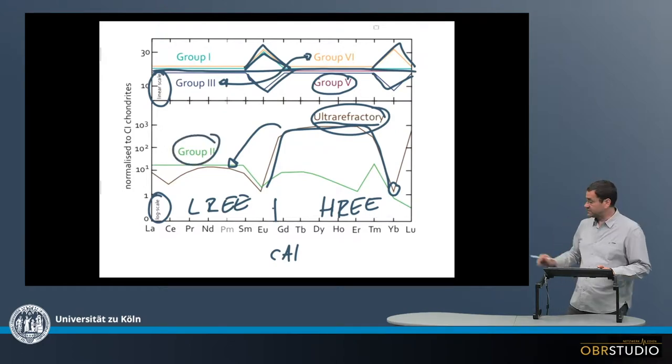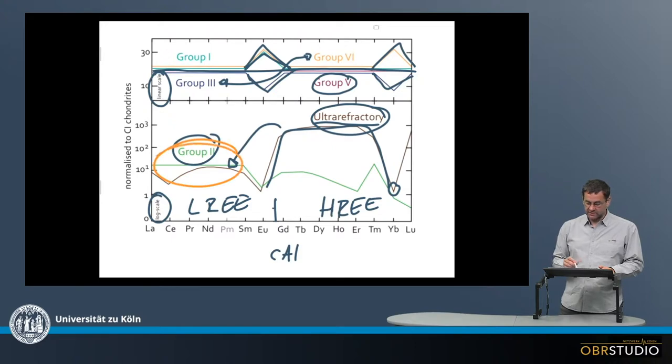Now the group 2 pattern, again there's a fractionation between the light and heavy rare earth elements, but it's a little bit complementary to the ultra-refractories, because in this case, the light rare earth elements are slightly enriched relative to the heavy rare earth elements here in group 2.